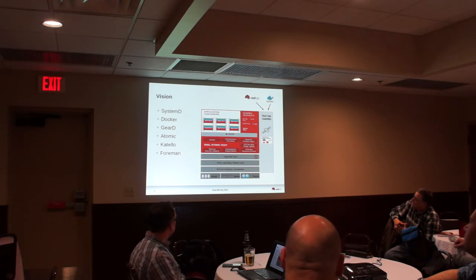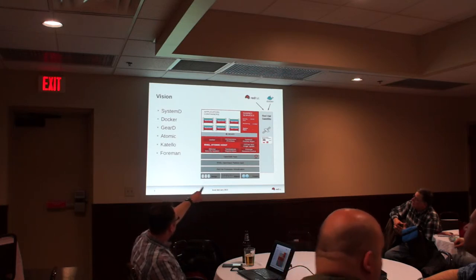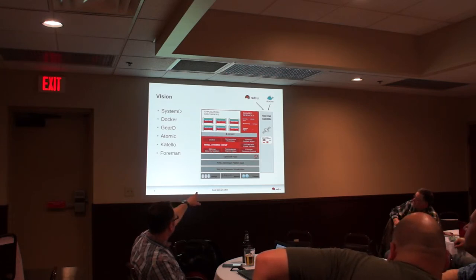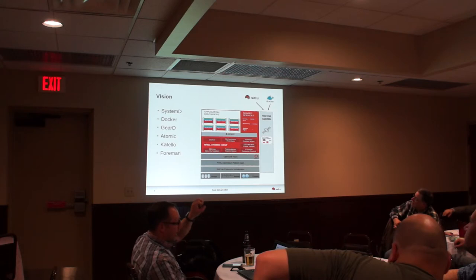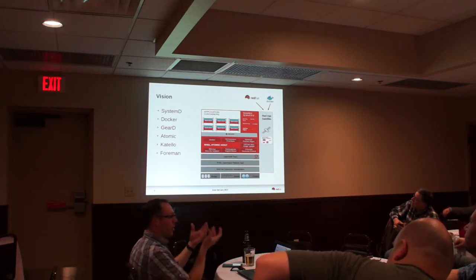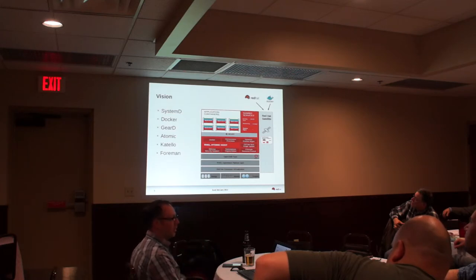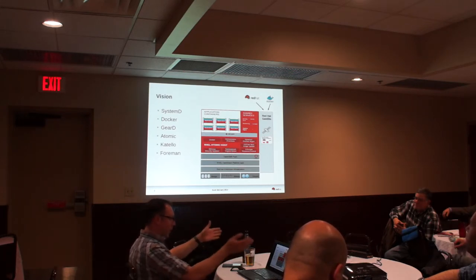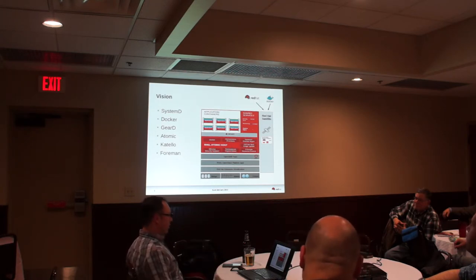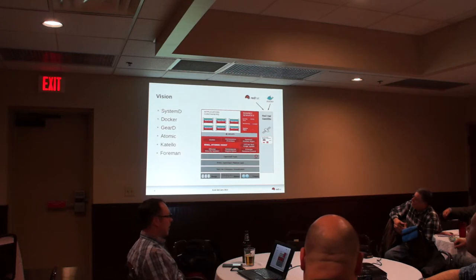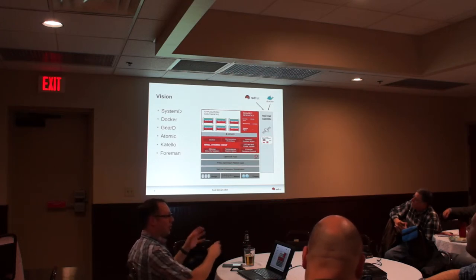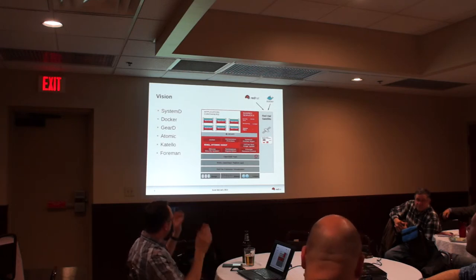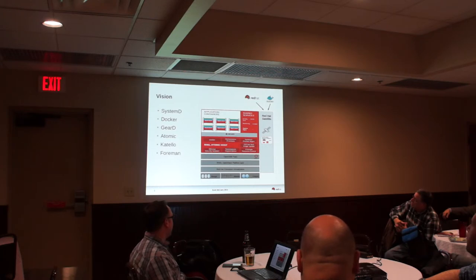That's the vision. Satellite 6 is shown on the side - it'll be able to provide RPM OS trees, OS tree host image updates, RPMs, and Puppet modules - all three types of content. It's basically an infrastructure content management system. You'll be able to promote a set of RPM OS trees and Puppet modules through dev, stage, test, and prod - application lifecycles inside Satellite to promote content between different environments.